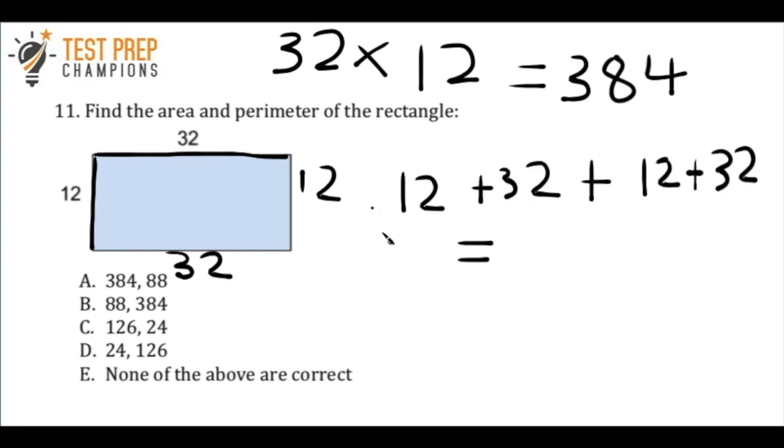Okay, so again, all I'm doing here is I'm just taking all the sides. So I'm going to do 12, then I've got 32, then another 12, then another 32. So I just went around, add them all up, and that equals 88.